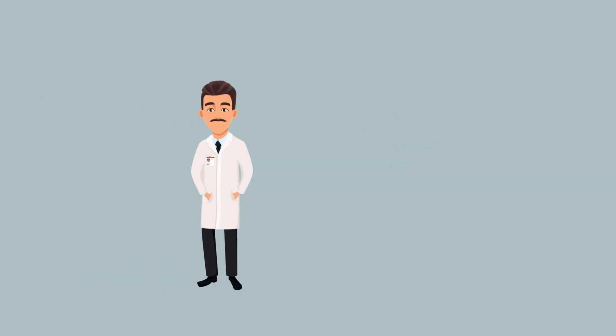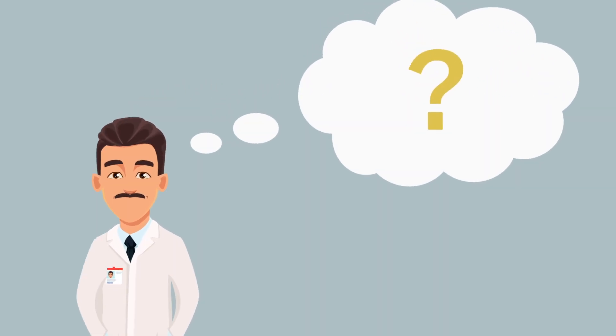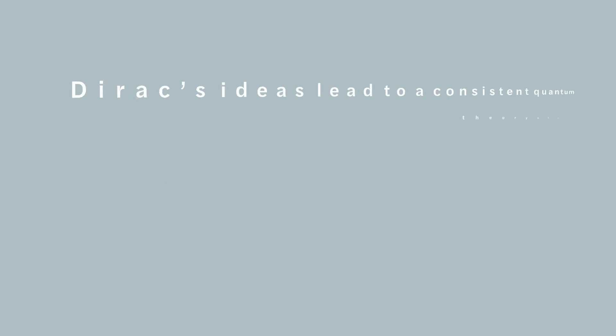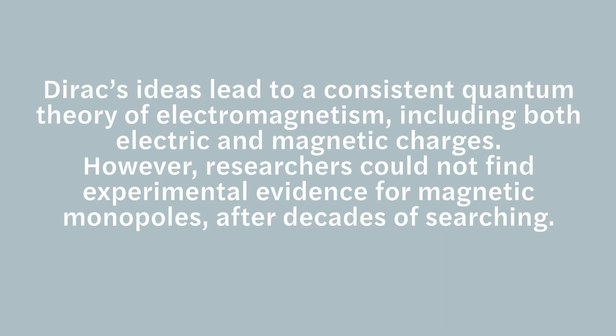However, in the 1930s, Paul Dirac doubted that there was a fundamental difference between the properties of electrical and magnetic charges. Through calculations, he showed how magnetic monopoles could exist after all. Dirac's ideas led to a consistent quantum theory of electromagnetism, including both electric and magnetic charges. However, researchers could not find experimental evidence for magnetic monopoles after decades of searching.